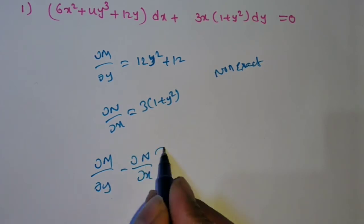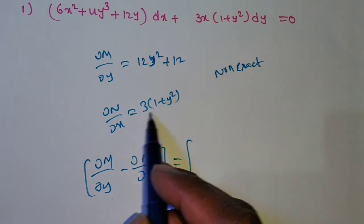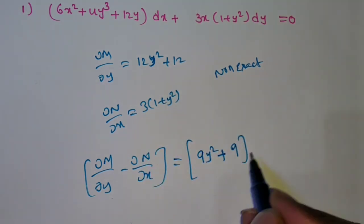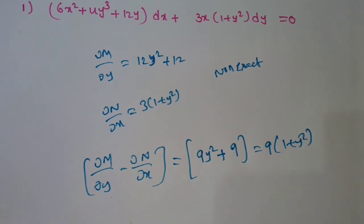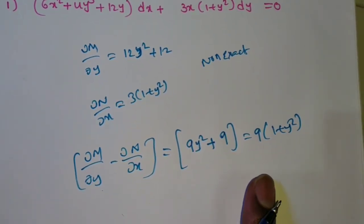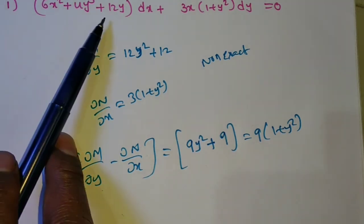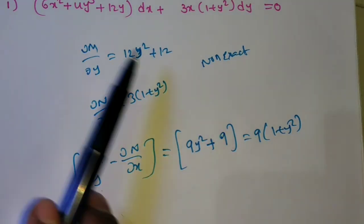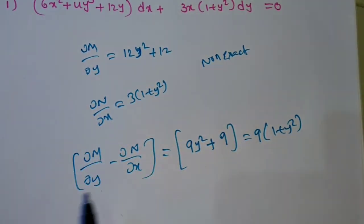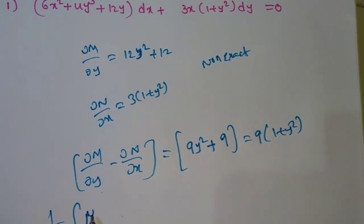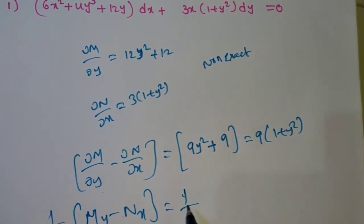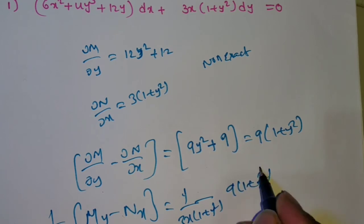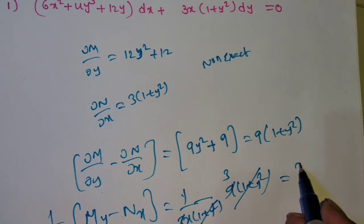Find ∂M/∂y minus ∂N/∂x: 12y² + 12 minus (3y² + 3) = 9y² + 9 = 9(1+y²). Divide by M — M has 3 terms, doesn't simplify. Divide by N: N = 3x(1+y²). Then 9(1+y²) divided by 3x(1+y²) — the (1+y²) cancels — giving 3/x = f(x).